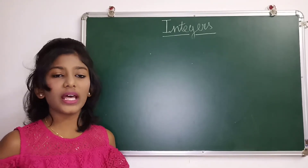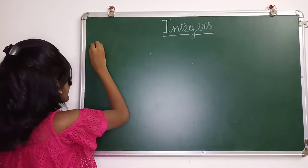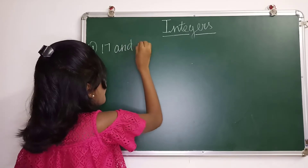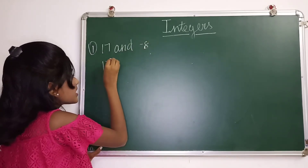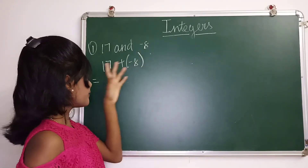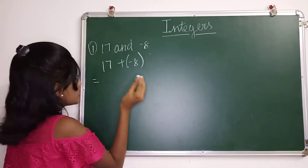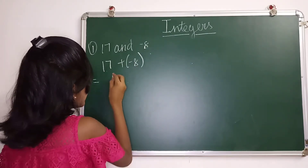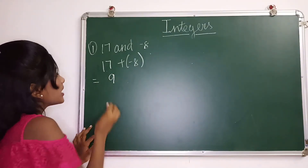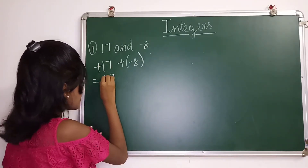Now we are going to see some examples of addition in integers. The first example is 17 plus minus 8. If there are different signs, we have to subtract them and put the greater sign. So 17 minus 8 is 9. Since 17 is greater and has no sign — which represents positive — the answer is plus 9.